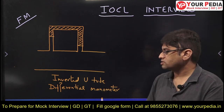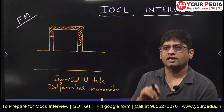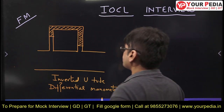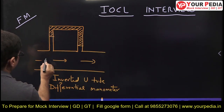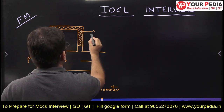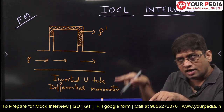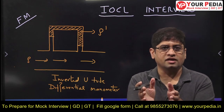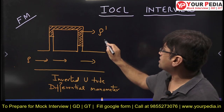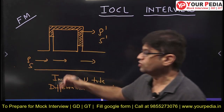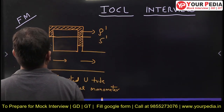Manometers are of many types. There is a difference between a U-tube manometer and an inverted U-tube manometer. Let us say the fluid is flowing in the pipe with density rho, and the manometric liquid has density rho_s. In an inverted U-tube manometer, the manometric liquid has a density lesser than the density of the fluid flowing in the pipe — its specific gravity is less than that of the flowing fluid.